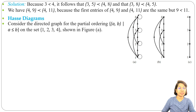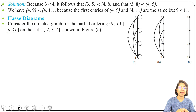First example: consider the directed graph for the partial ordering (A, B) such that A ≤ B on the set {1, 2, 3, 4}. We have 4 elements — 1, 2, 3, 4 — and the relation is A should be less than or equal to B.